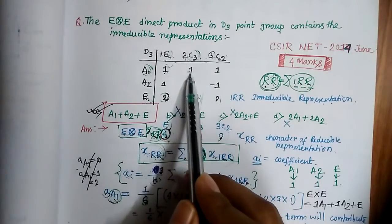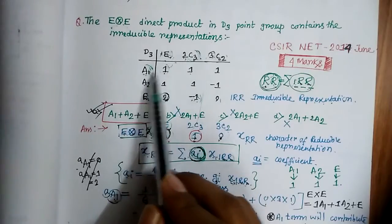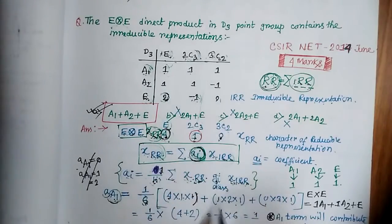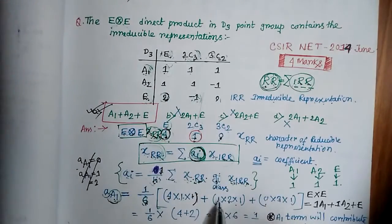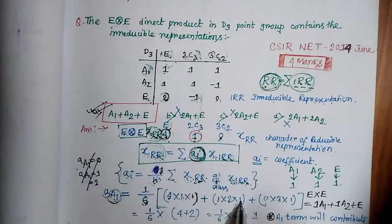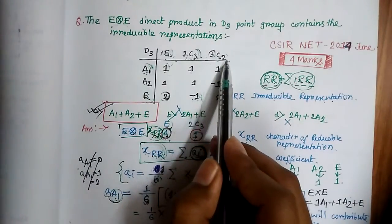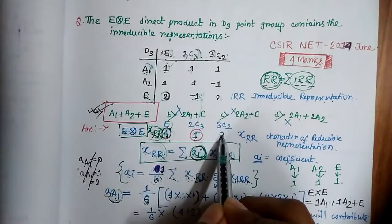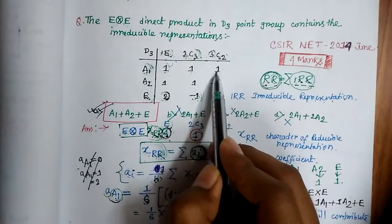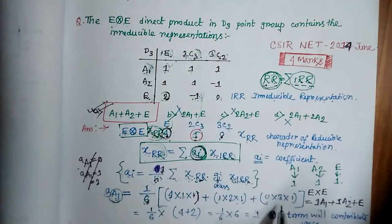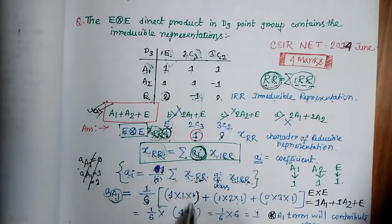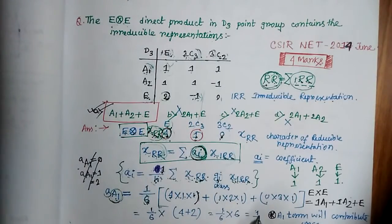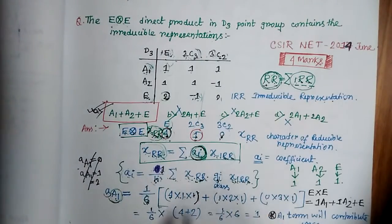Continuing the calculation for a(A1): for C3 it is 1 × 2 × 1, and for C2 it is 0 × 3 × 1 = 0. So a(A1) = (1/6) × (4 + 2 + 0) = (1/6) × 6 = 1. The coefficient of A1 is 1, which means the A1 term contributes exactly one time.